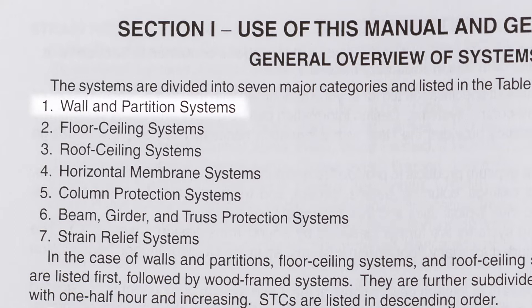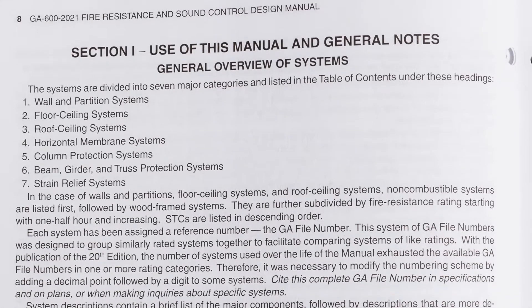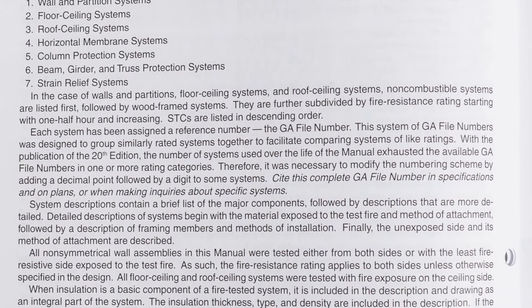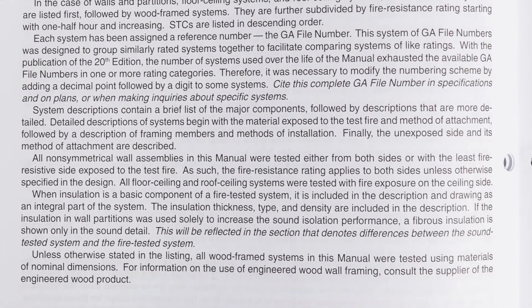The seven major categories are: wall and partition systems, floor ceiling systems, roof ceiling systems, horizontal membrane systems, column protection systems, beam, girder, and truss protection systems, and strain relief systems. Systems are classified according to their typical uses and their fire resistance ratings.